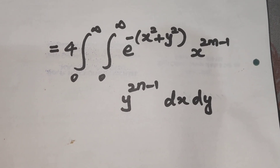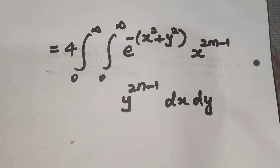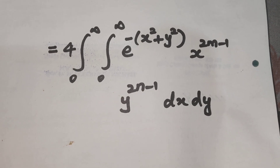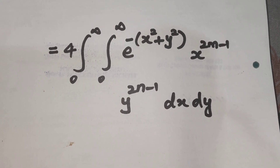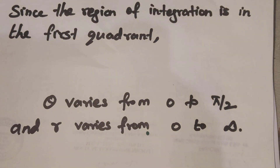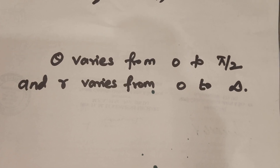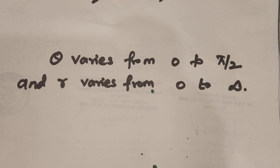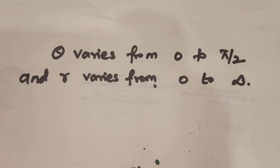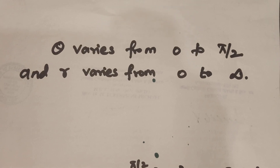Now we transform Cartesian coordinates into polar coordinates by putting x equal to r cos theta and y equal to r sin theta. When x is r cos theta and y is r sin theta, we get x square plus y square equal to r square. Since the region of integration is in the first quadrant, theta varies from 0 to pi by 2 and r varies from 0 to infinity.